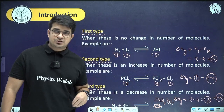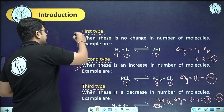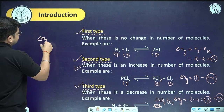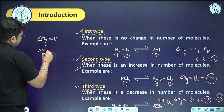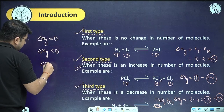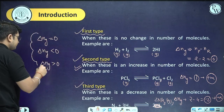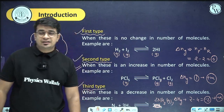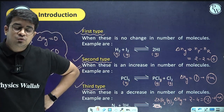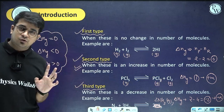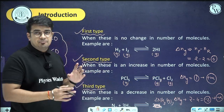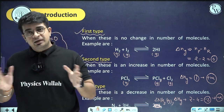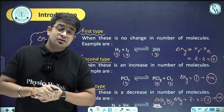There are three types of homogeneous reactions: where ΔNg = 0, ΔNg < 0, and ΔNg > 0. These are relevant for calculating equilibrium constant — we'll understand how the equilibrium constant changes in each case. Our focus will mostly be on homogeneous reactions, though heterogeneous reactions will also be discussed.